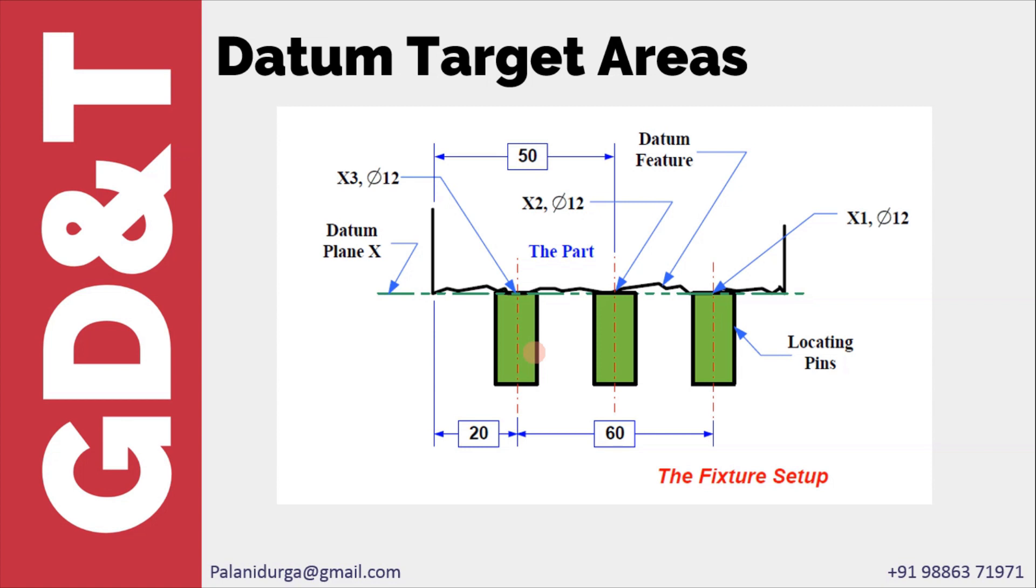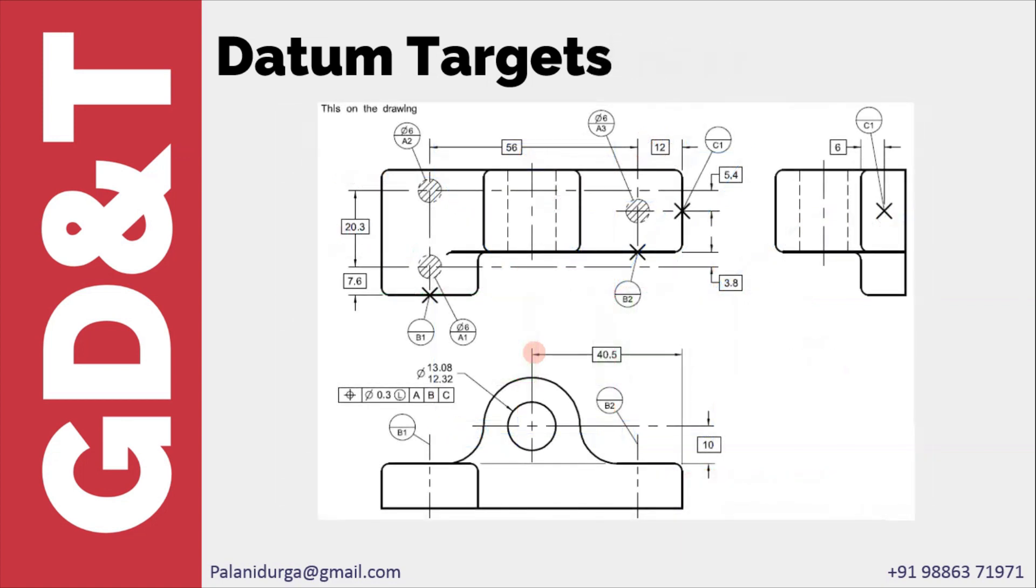Before going further, we have an example where all three are being used. If you see, you have datum target areas here: A1, A2, and A3. Then we have datum target line B1, B2, and then we have datum target point C1.